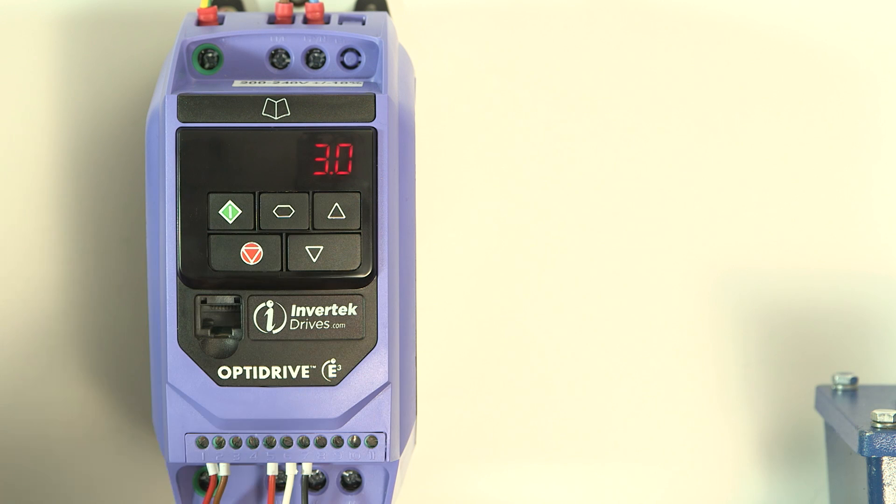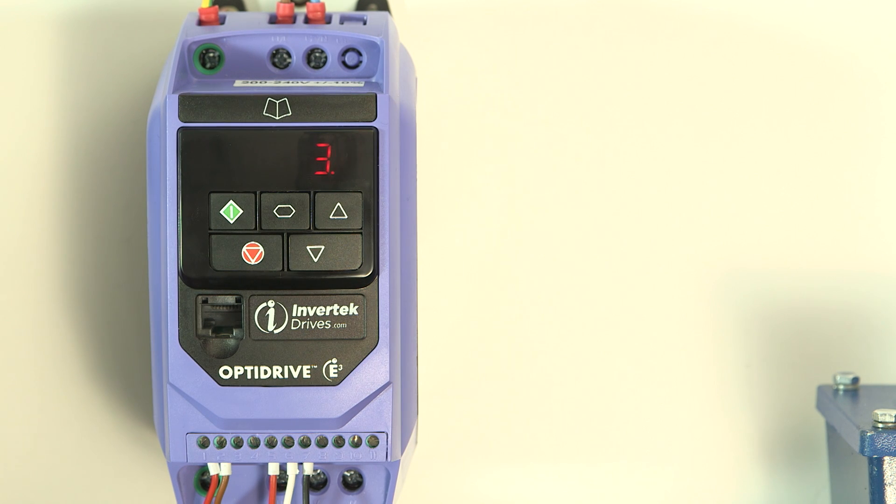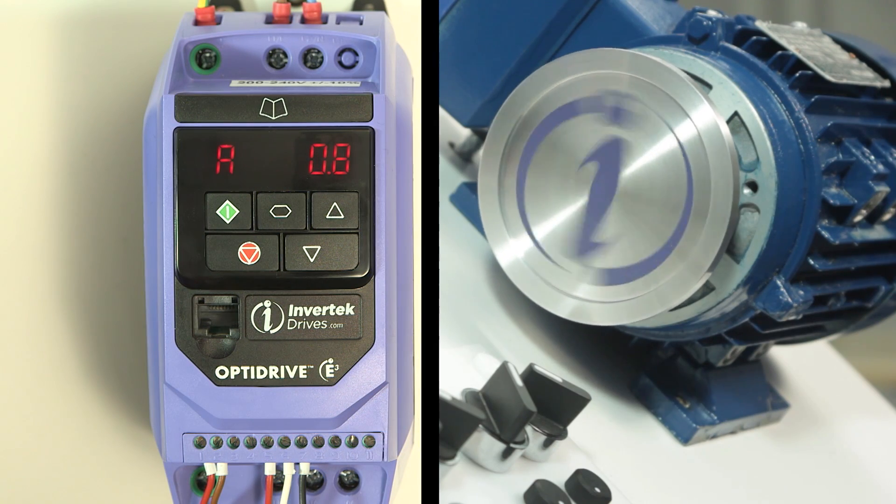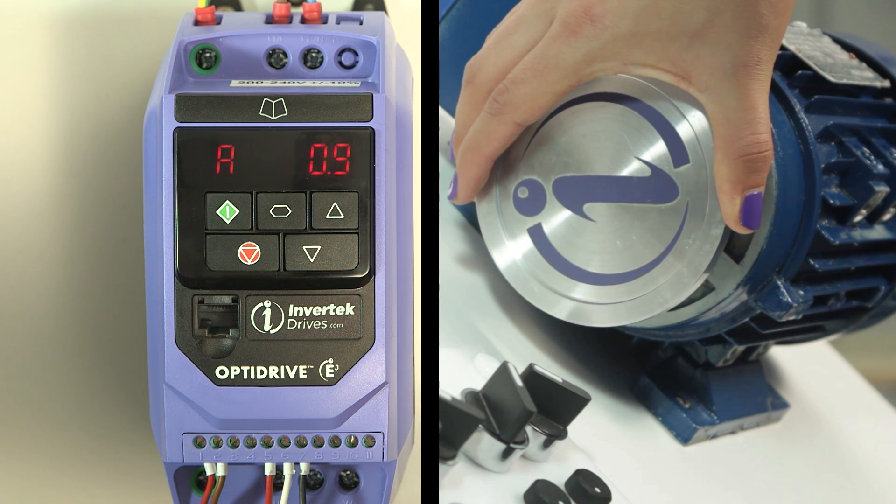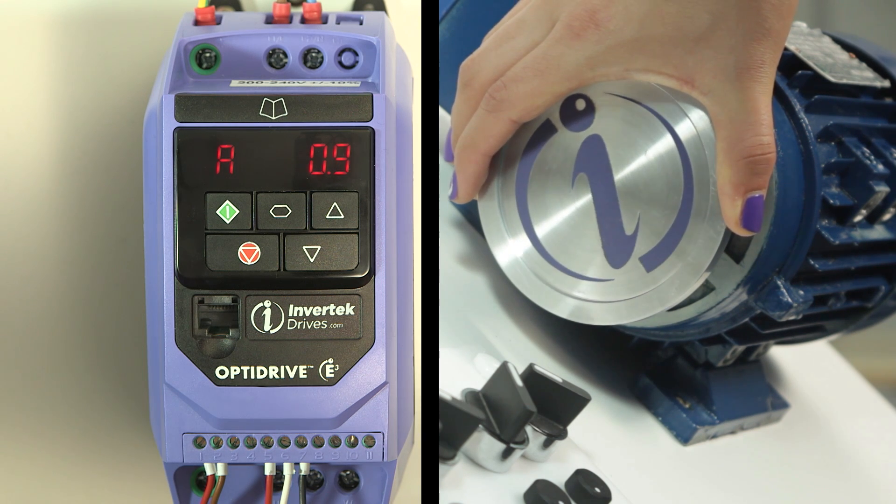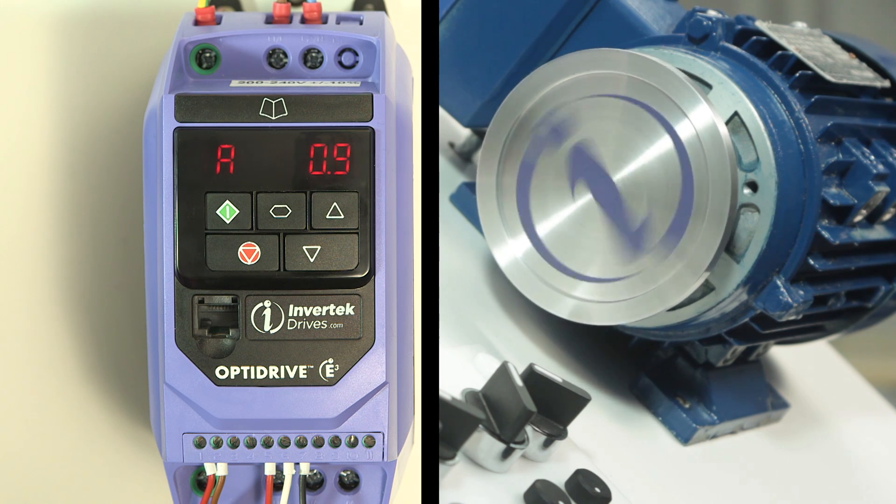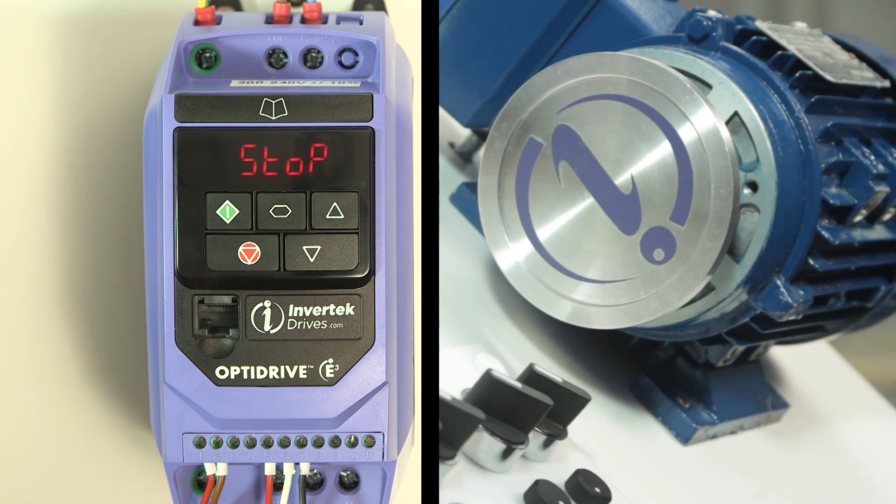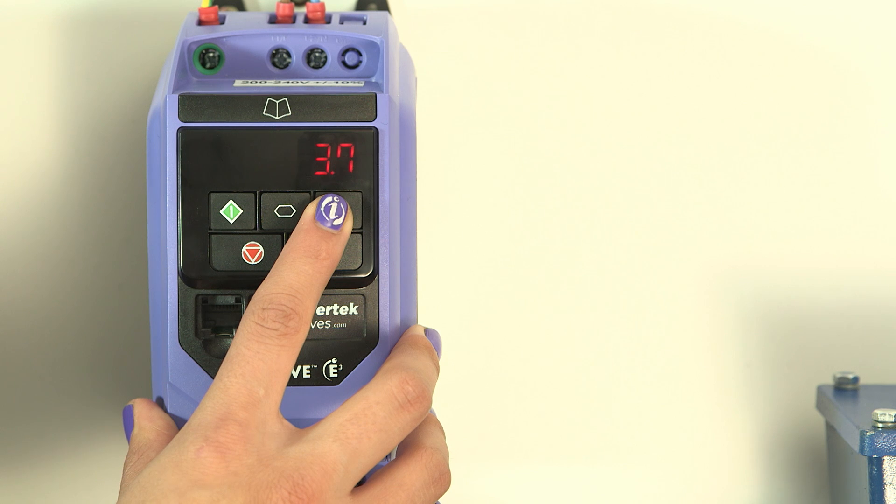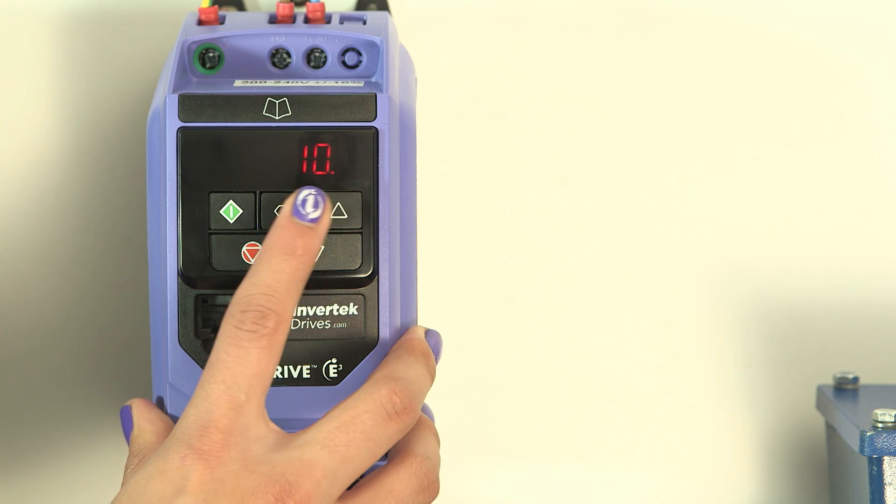Moving on then to parameter 11, this parameter increases the output voltage of the drive at low speeds. This can be very useful to overcome losses and non-linearity and increase the available torque. Use this boost setting when starting a difficult load, such as a conveyor or mixer. Don't put in too much boost as this increases the losses and may cause overheating in the motor. Without boost, there is practically no torque at low speed. The current is quite low as well. Now put some boost in, say 10% and you can see the current is higher and the torque is greater.